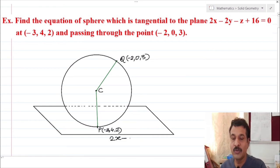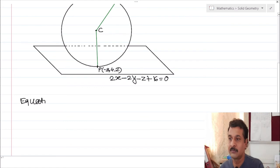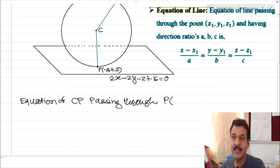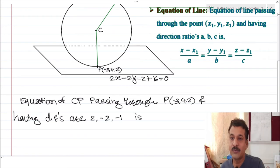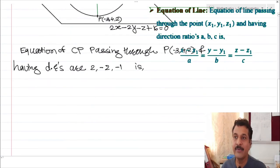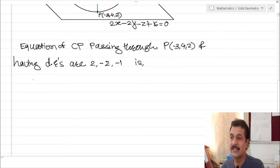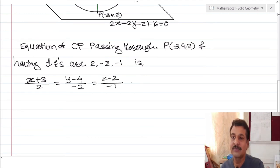The equation of this plane is 2x minus 2y minus z plus 16 equal to zero. Now find the equation of line CP, which passes through the known point P(minus 3, 4, 2) and has direction ratios 2, minus 2, minus 1 — since CP is normal to this plane, those are its direction ratios. So the equation of line CP is (x plus 3)/2 equal to (y minus 4)/(minus 2) equal to (z minus 2)/(minus 1), all equal to k.